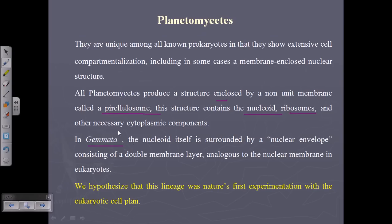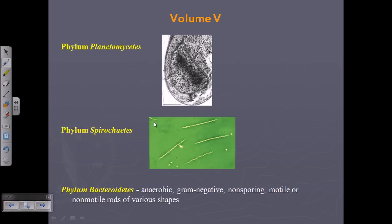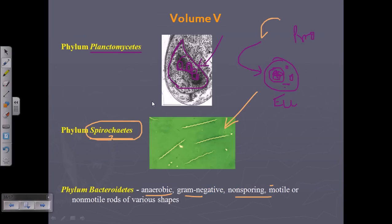Planctomycetes also have the gemata structure where the nucleoid itself is surrounded by a nuclear envelope. Scientists hypothesize that this lineage was nature's first experiment with eukaryotic cell planning — nature beginning to plan the production of eukaryotic cells from prokaryotic cells through the evolutionary journey. Planctomycetes represent the type of bacteria that took the initial leap toward this journey.